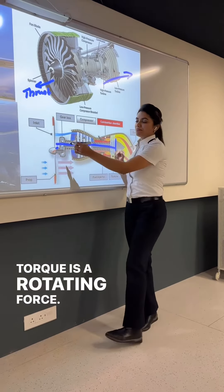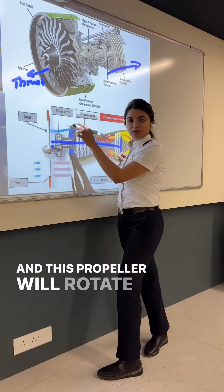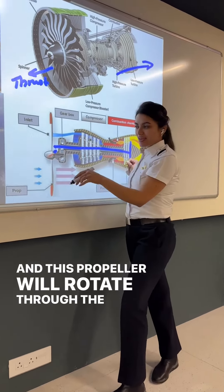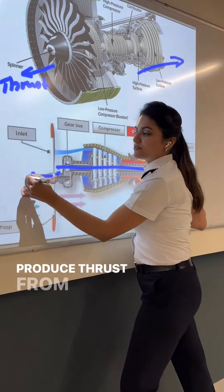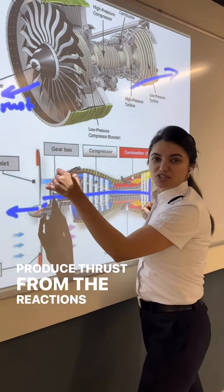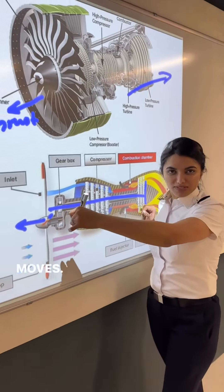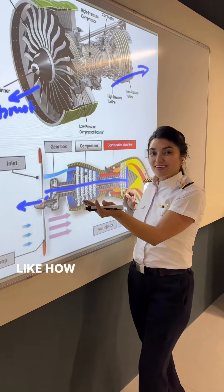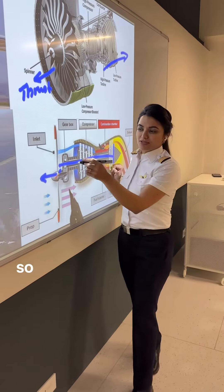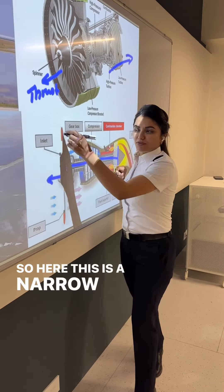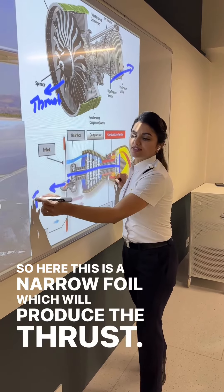Torque is a rotating force, and this propeller will rotate through the air and will produce thrust from the reactions of air through which it moves. Like how we have seen the wing produces lift, here this is an airfoil which will produce the thrust.